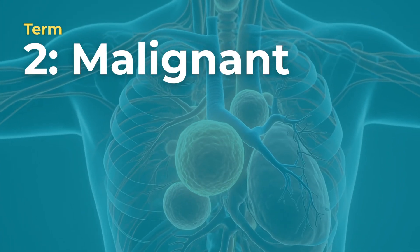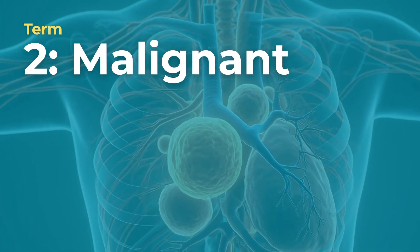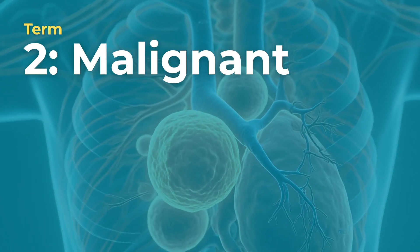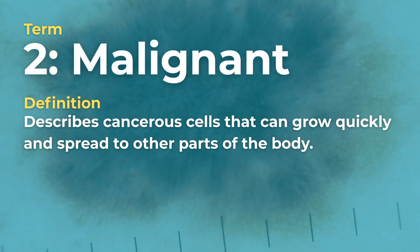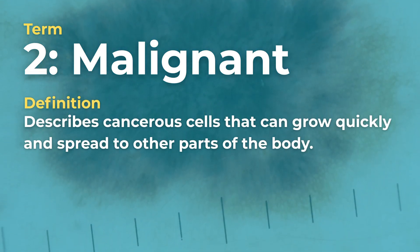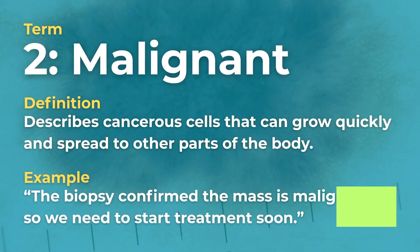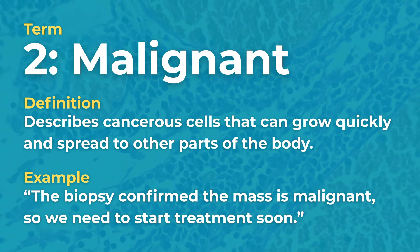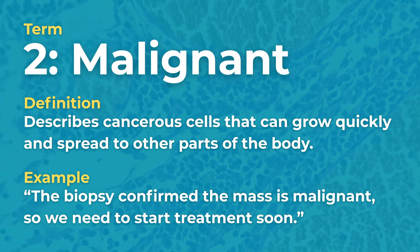Term number two is malignant. Malignant describes cancerous cells that can grow quickly and spread to other parts of the body. Example: 'The biopsy confirmed the mass is malignant, so we need to start treatment soon.'